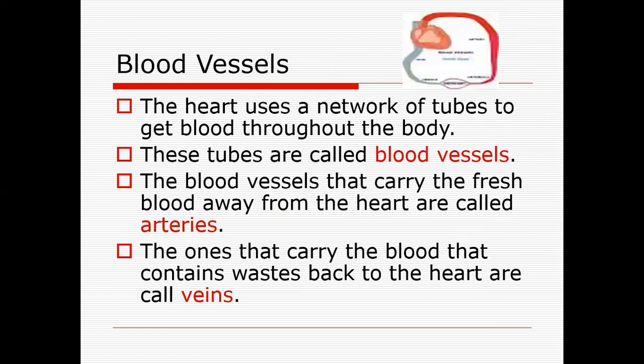All this work is done by blood vessels. There are three types of blood vessels: arteries, veins, and capillaries. Arteries always carry oxygenated blood away from the heart — except the pulmonary artery, which carries deoxygenated blood from the right ventricle to the lungs. Veins carry deoxygenated blood toward the heart — except the pulmonary veins, which carry oxygenated blood from the lungs back to the heart.